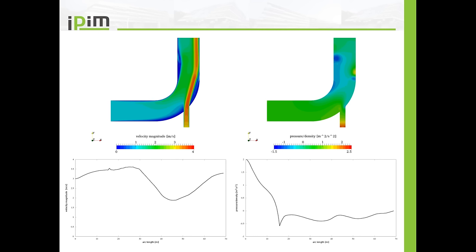Here you see the finished results. We will solve a two-dimensional flow in an elbow. Here you see the velocity magnitude, the pressure divided by density, and I will explain how you can save these pictures and how you can write out diagrams.